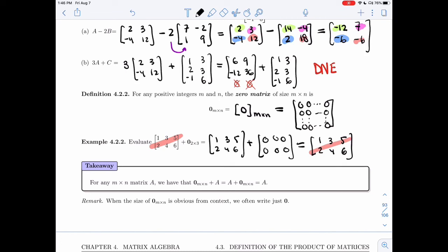When the size of 0_{m×n} is obvious from the context, we'll actually not write the m cross n, so we'll just write the 0, but it's a bold 0 to tell you that it's not the number 0, it's the matrix 0.